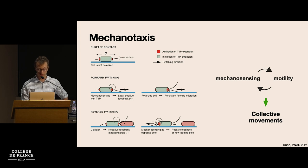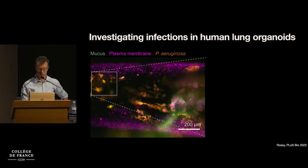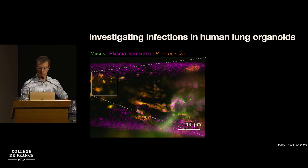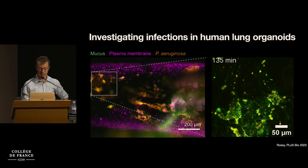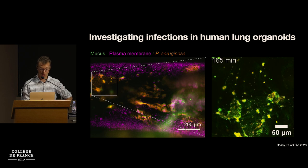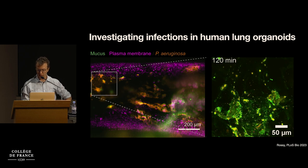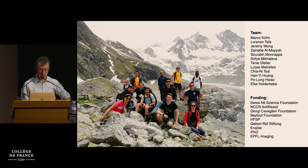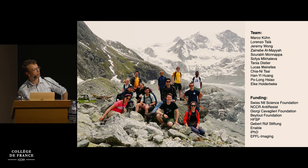I want to finish by stressing this new idea that we're trying to understand these phenomena in contexts closer and closer to human infection, which is why we're developing organoids. We did this with Knud on the gut aspect, and now we're doing this for the lung — looking at the effect of collective migration on the mucus surface using transparent mini-organs in the lab that replicate the physical environments that microbes should be interacting with in patients. With this, I'd like to thank my team — in particular Marco, Lorenzo, Jeremy, and Tamara, who has since left. I'd be happy to take your questions. Thank you.